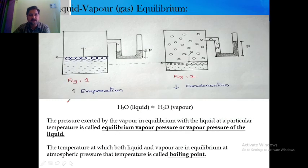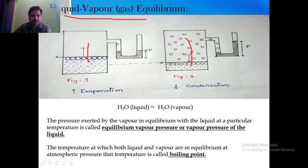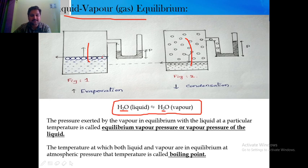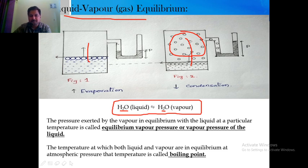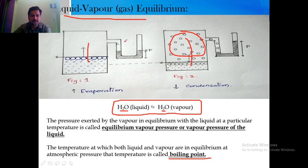For liquid-vapor equilibrium, some molecules enter the vapor state and vapor molecules condense back into liquid — just as in the first example with water vapor and liquid water. This takes place at constant pressure. The pressure exerted by the vapor at equilibrium at a particular temperature is called the equilibrium pressure or vapor pressure of the liquid. The temperature at which both liquid and vapor are in equilibrium at atmospheric pressure is called the boiling point.